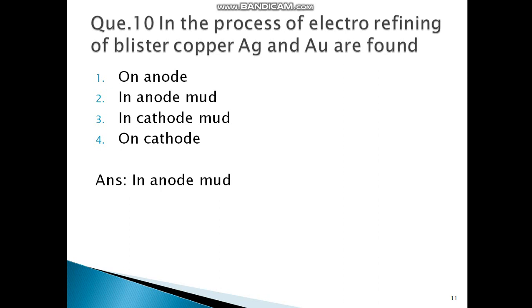Next question: In the process of electro refining of blister copper, silver and gold are found? Imagine the figure. In electro refining, blister copper is used as anode, pure plate of copper is used as cathode, and anode mud crumbles down below the anode where precious metals are found. So silver, gold are the precious metals which are found in the anode mud.